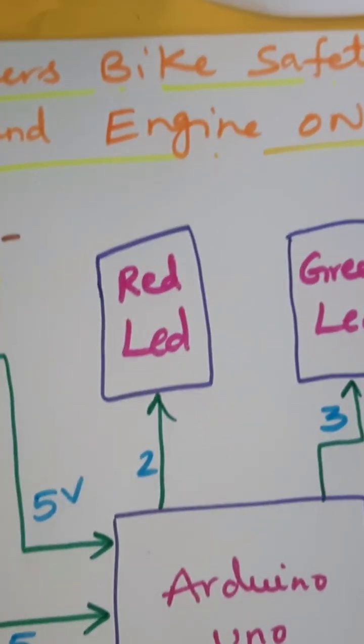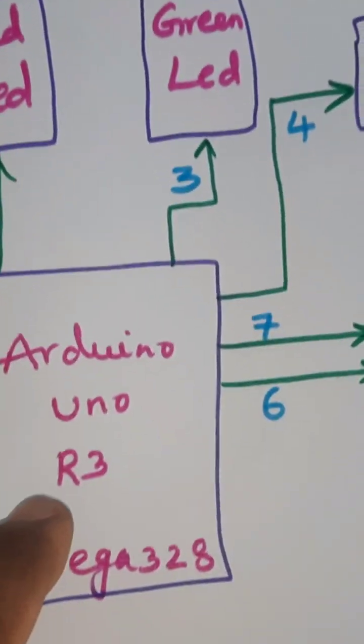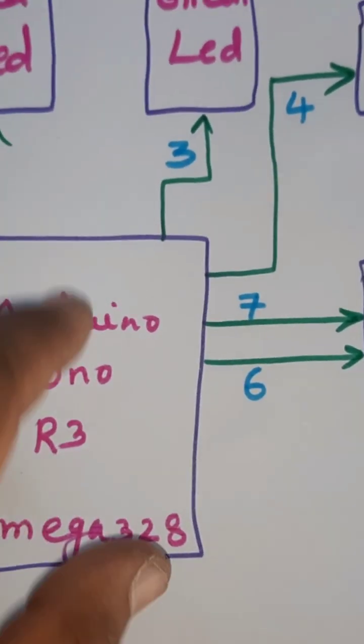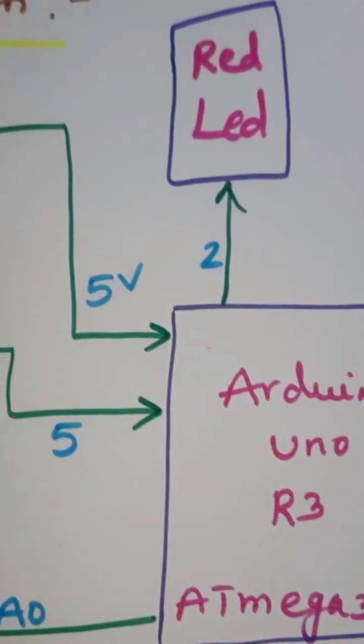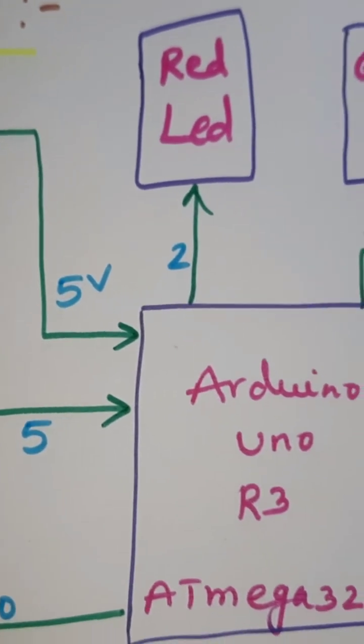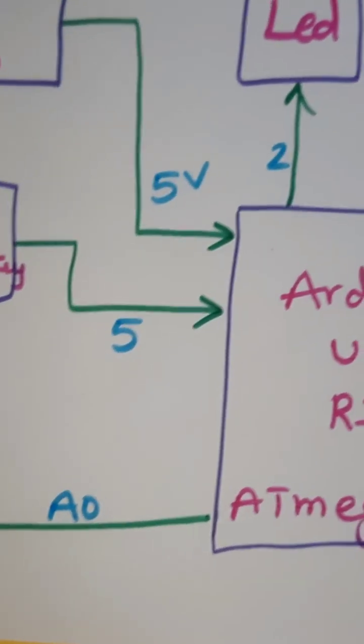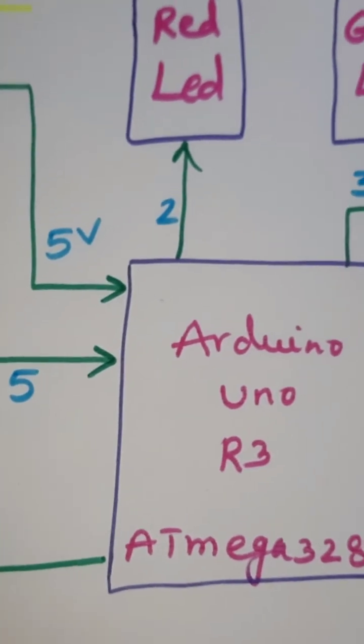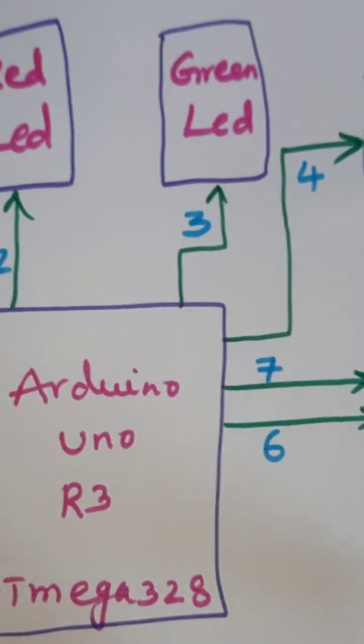It will send data to the 5 volts Arduino Uno R3 ATmega328 controller board IC. We have an engine key for on and off control and one engine motor. When the key is turned on, first it will start the engine, then it will go for the stand.